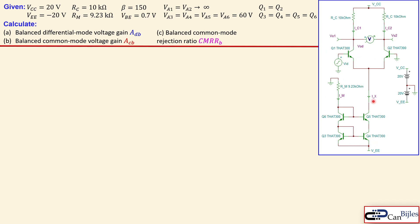This is the circuit in the differential pair format for our BJTs, and you can see the cascode current source with values for all components. We need to recognize that Q1 and Q2 are matched, and the Early voltage for those two transistors is assumed to be infinite. For Q3, Q4, Q5, and Q6, they are also matched but have an Early voltage of 60 volts. For all transistors, beta is 150 and the base-emitter junction voltage is 0.7 volts. We want to calculate the balanced differential mode voltage gain, the common mode voltage gain, and the balanced common mode rejection ratio.